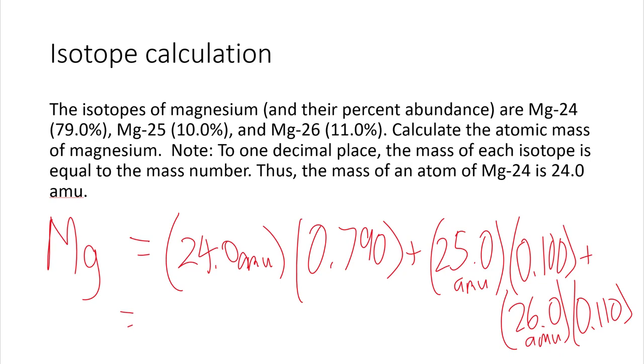So it's 24 times 0.790, and that's 19.0 with rounding, 19.0 AMUs. Then you do 25 times 0.1, that's 2.50 AMUs. And then 26 times 0.11, and that's 2.86 AMUs.